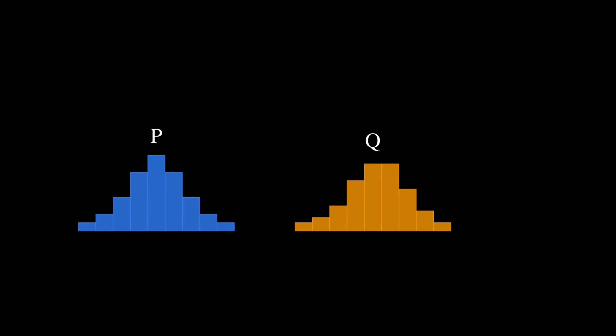Here's a problem you'll find everywhere in machine learning. You have two probability distributions, and you need to measure how similar they are. The obvious approach is to subtract them and measure the difference. But that method has a fatal flaw.